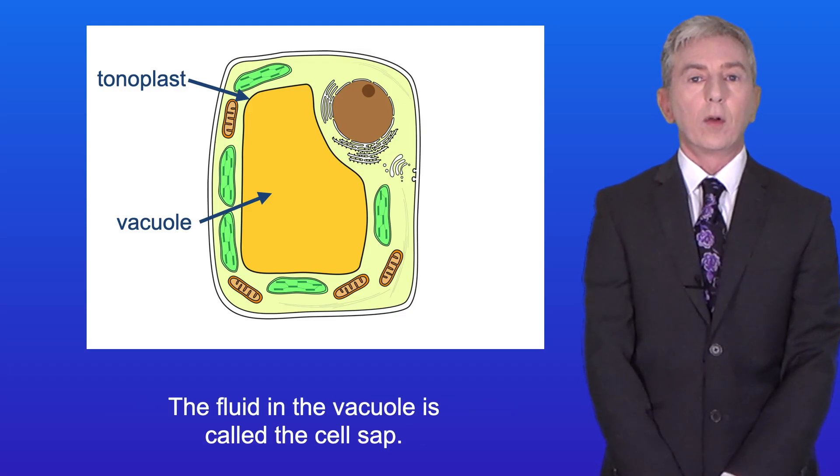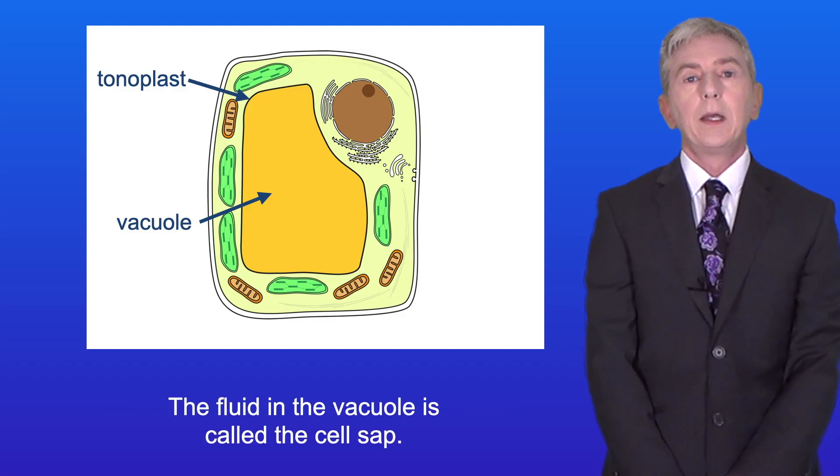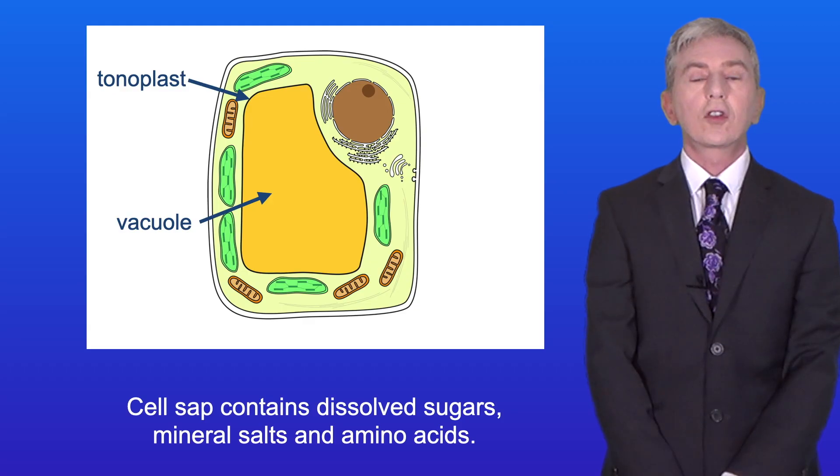The fluid in the vacuole is called the cell sap. Cell sap contains dissolved sugars, mineral salts and amino acids.